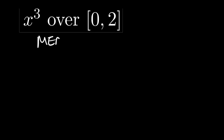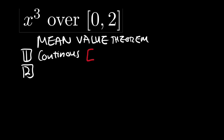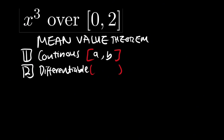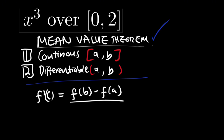The mean value theorem is the easier version of Rolle's theorem. In the mean value theorem, only two conditions are needed. The first condition: the function has to be continuous on the closed interval of two numbers. The second condition: it has to be differentiable on the open interval of those two numbers. If these two conditions are fulfilled, then f'(c), or the slope at point c, will be equal to f(b) minus f(a) divided by b minus a.